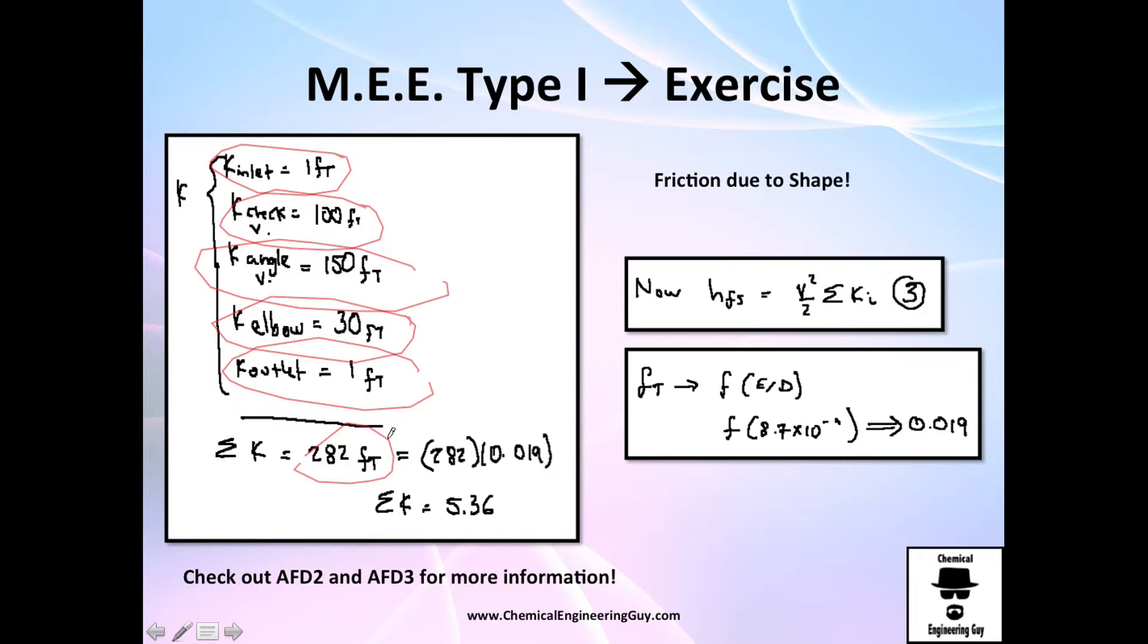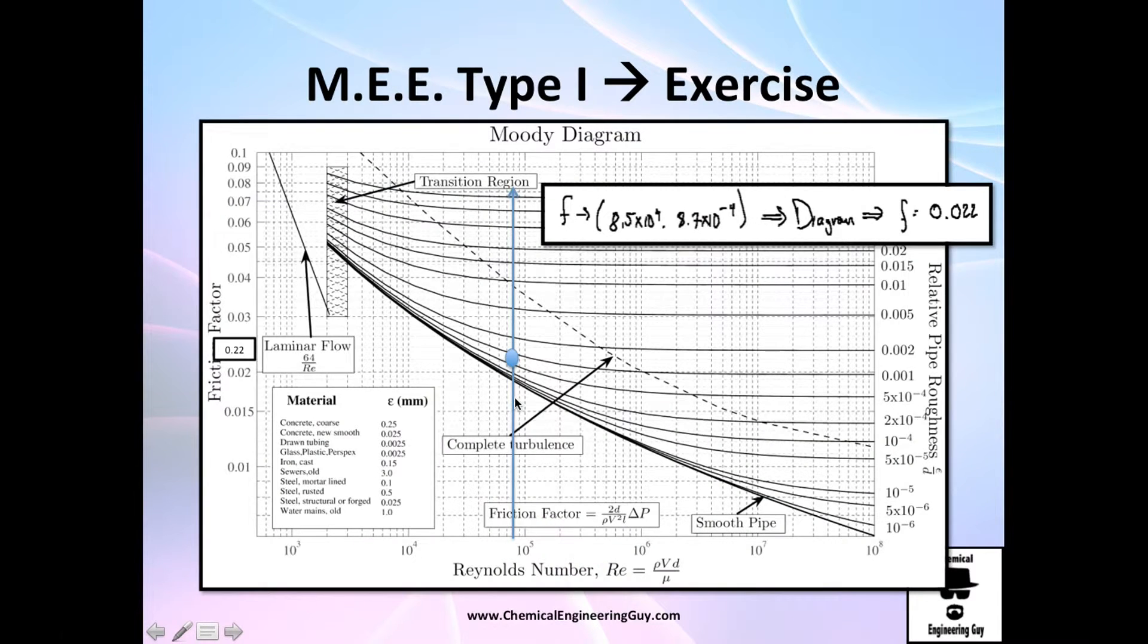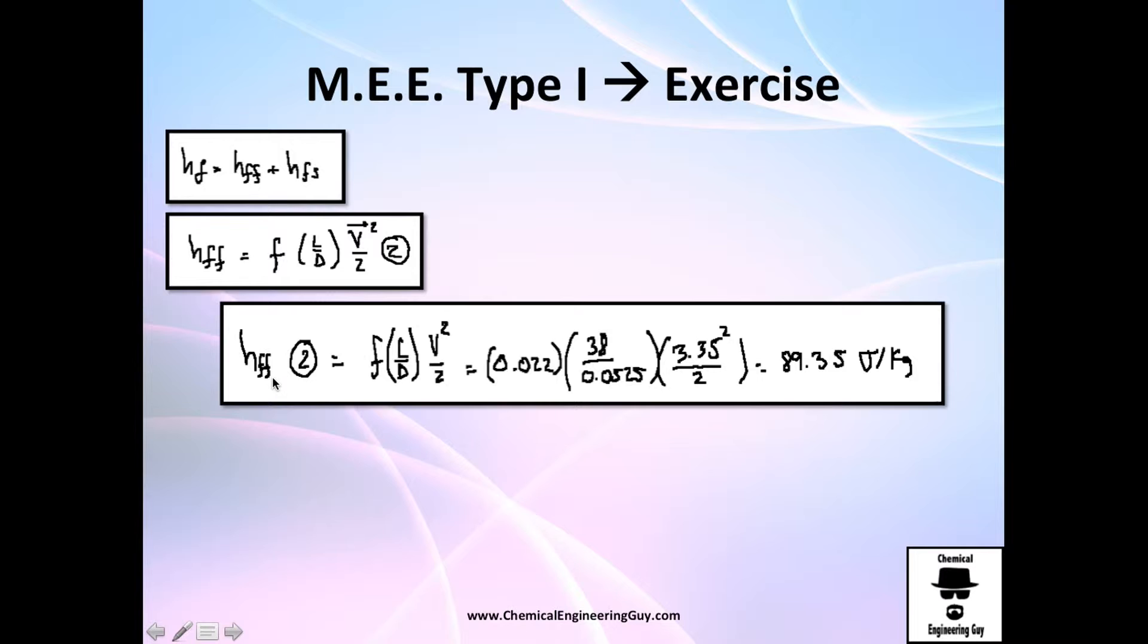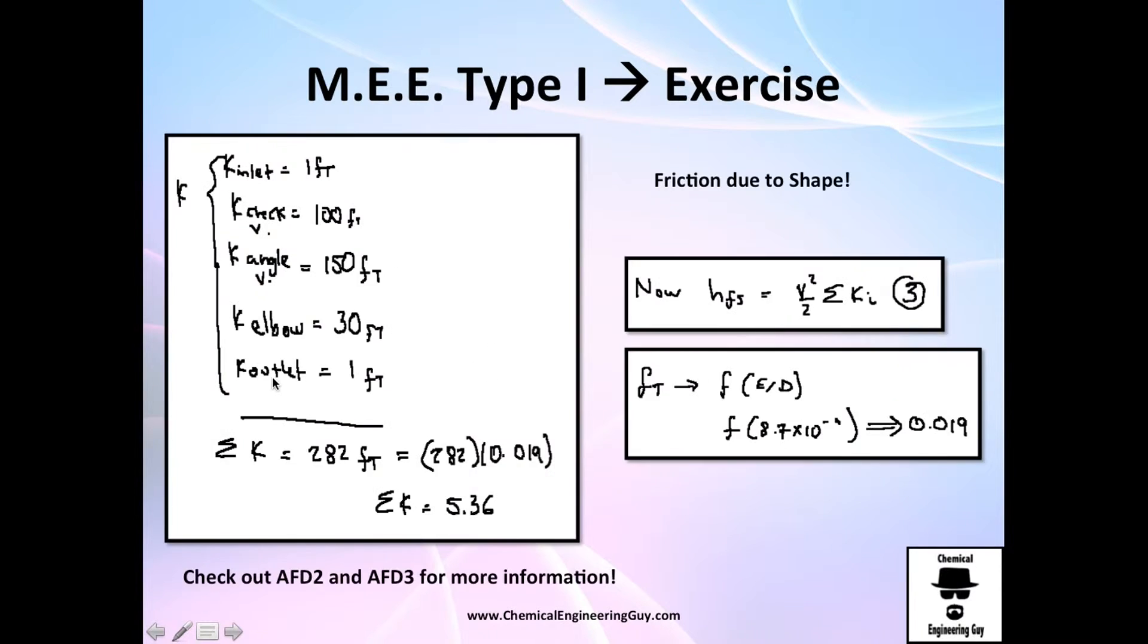So I got this. I add all these together. And my FD value, it's here. Must be something around, the Reynolds number is almost here. So if I go directly here, I will see that my FD value in infinity is about 0.019.